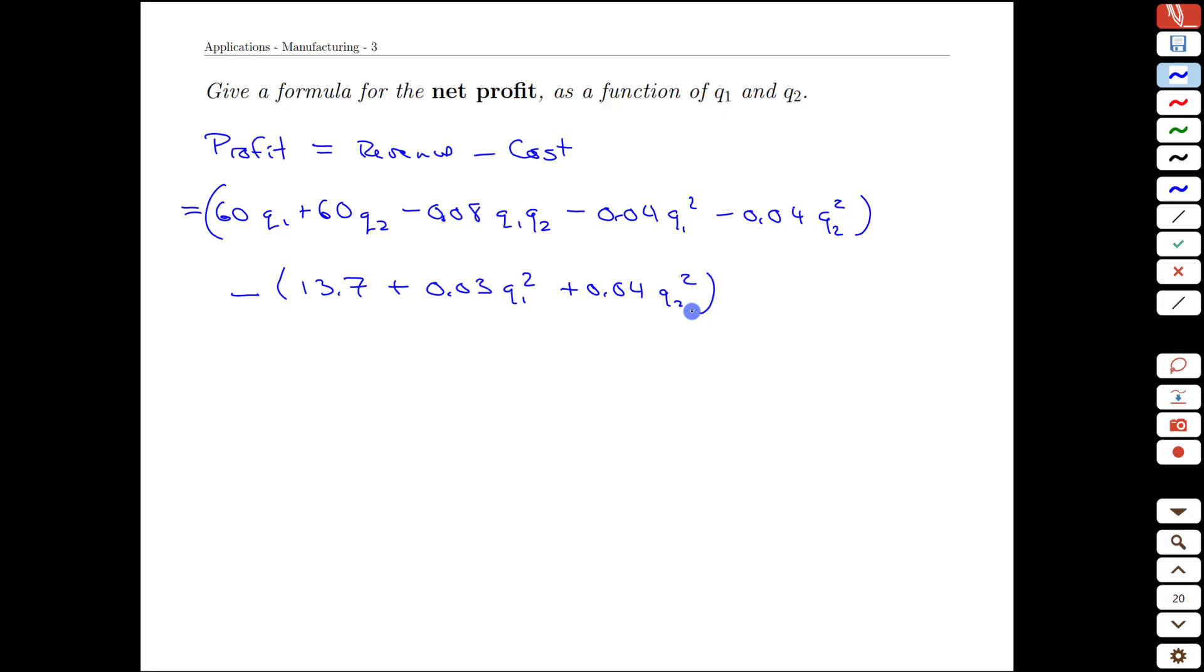Which were on the first calculation: 13.7 plus 0.03 and 0.04 for q1 squared and q2 squared respectively. It's crucial at this point to include the parentheses here to get the signs right.